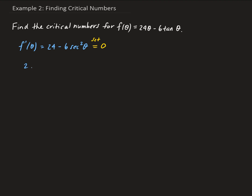From here we set this derivative equal to 0. So we have 24 minus 6 secant squared theta equals 0. We can factor out a 6, giving us 6 times (4 minus secant squared theta) equals 0, which means secant squared theta equals 4.